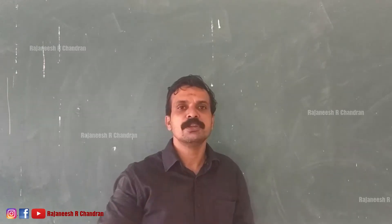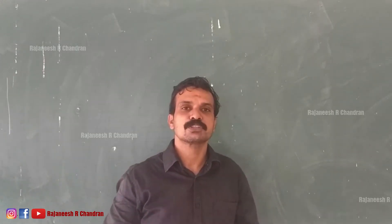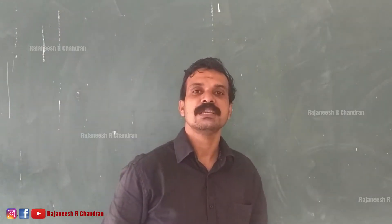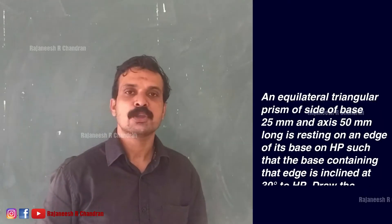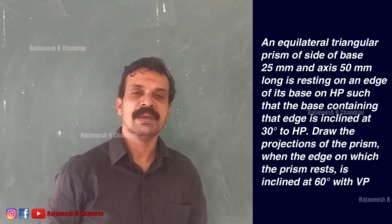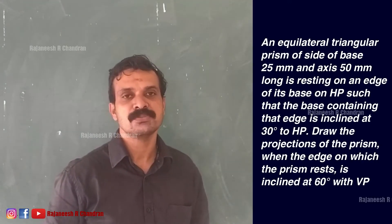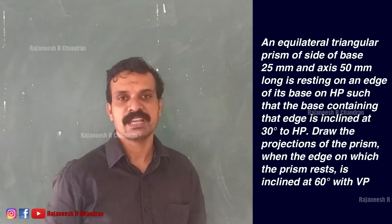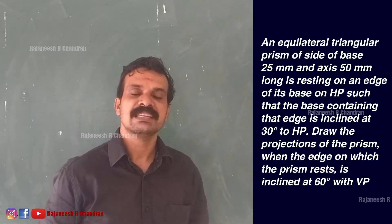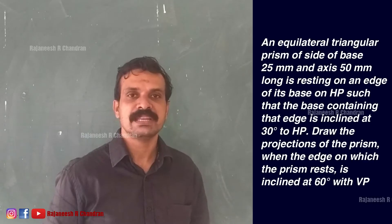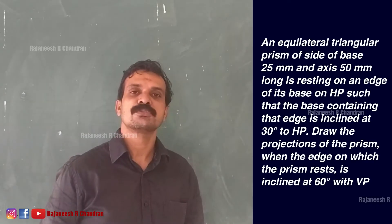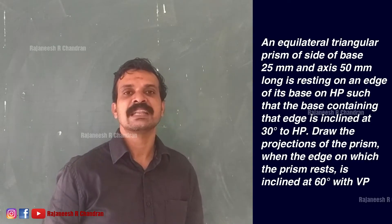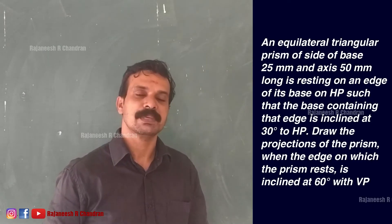In this particular video, we are going to study about the projection of a triangular prism. The problem you can see on your screen right now: an equilateral triangular prism of base edge 25 mm and height 50 mm is resting on one of its base edges on HP such that the face containing that edge is inclined at an angle of 30 degrees with HP. Draw the projections when the edge on which the prism rests is inclined at an angle of 60 degrees with the VP.